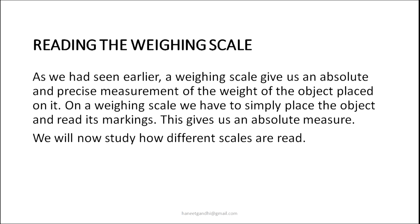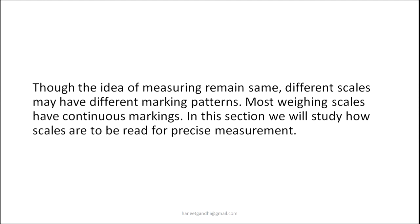An important skill now is to read the weighing scale. A weighing scale gives us an absolute and precise measurement of the weight of the object placed on it. We simply place the object and read its marking. Since we are familiar with reading a normal ruler, reading a weighing scale is not a difficult task. Though the idea of measuring remains the same, different scales have different marking patterns — most weighing scales have continuous marking. In this section we will study how the scales are to be read for precise measurement.